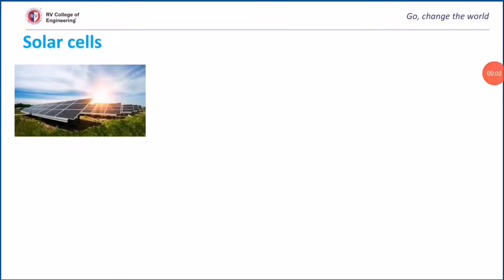Hello everyone, welcome back to engineering chemistry class. Today we will discuss solar cells: different types of solar cells, construction, working of solar cells, and finally advantages and disadvantages. It is estimated that earth receives solar energy almost equivalent to 20 × 10²⁰ kilojoules annually, which is almost 10,000 times more than our requirement. This solar energy is the only energy that fulfills our present and future energy needs.